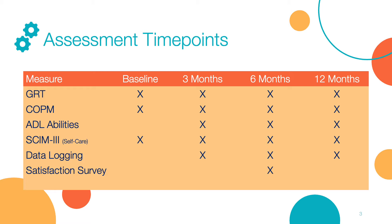Before we dig in, it's important to understand the assessment time points. In Module 5, we discussed the study timeline at length. This table summarizes the time points at which the primary and secondary outcome measures are administered. The critical time point for administering our primary outcome measure, the GRT, is at the 3-month visit. However, it's important to administer the test at 6 months and 12 months to measure function over time.